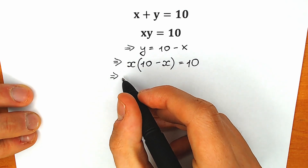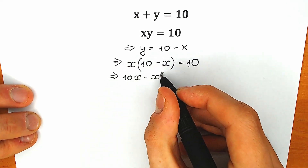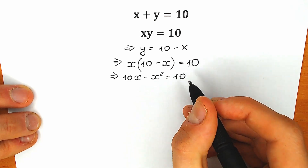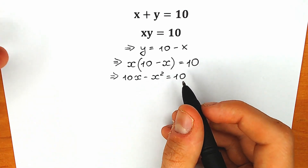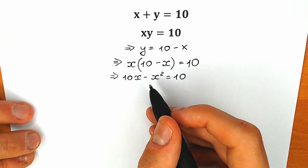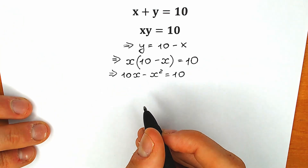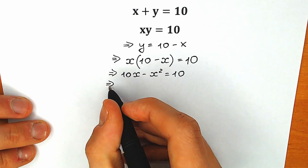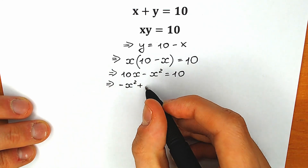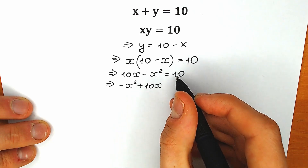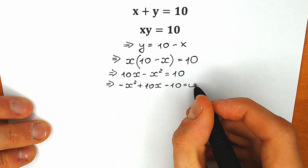Let's open our parentheses. As a result, we have 10x minus x squared equal to 10. Right now let's simplify this. Let's change the order, because it looks like a quadratic equation. So on the first position let's write minus x squared, then plus 10x on the second position, and minus 10 from the left side, so minus 10 equal to 0.